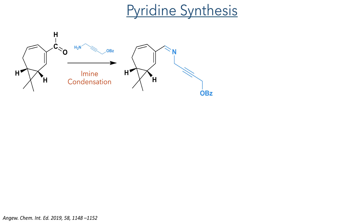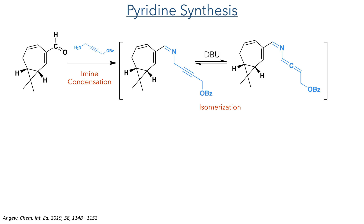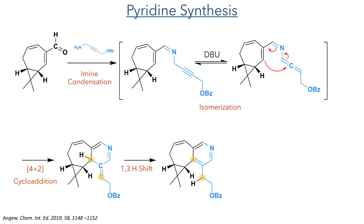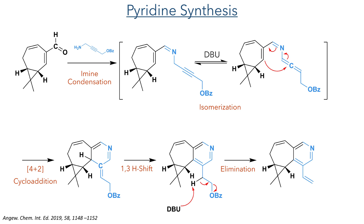With the aldehyde now installed, the authors proceeded to the pyridine synthesis. This was accomplished using an azotriene cyclisation. First, a propargyl amine is condensed with the aldehyde to form an imine. Treatment with DBU promotes a reversible isomerisation between an alkyne and an allene species. It is this allene species which undergoes a 6π electrocyclisation reaction to form a new sigma bond with the migration of two pi bonds. This unstable intermediate then undergoes a 1,3-hydride shift to generate the pyridine ring. DBU then deprotonates the hydrogen adjacent to the benzyl group, which eliminates to form an alkene.